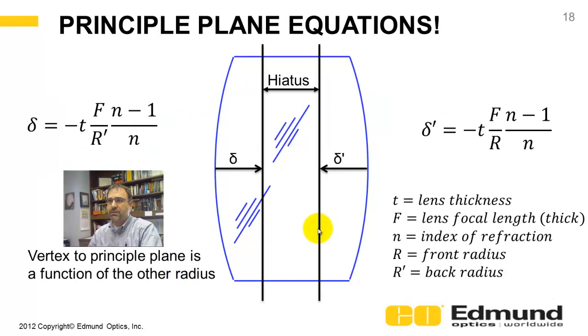How do you locate these principal planes? Here's the equations. The front principal plane from the vertex of the lens, and we have to pay attention to sign convention, is a function of the focal length of the lens, F, and this has to be the equation for the focal length based on the thick lens.